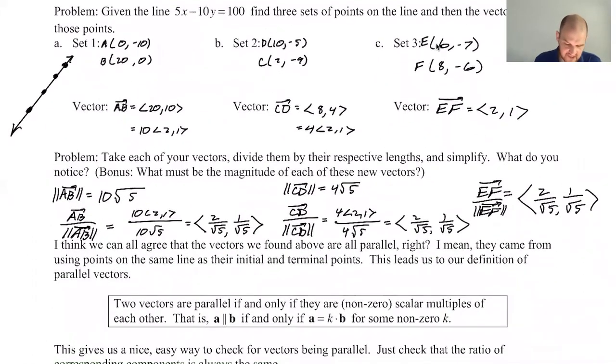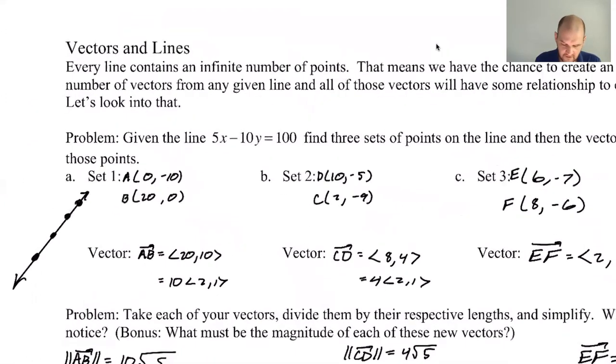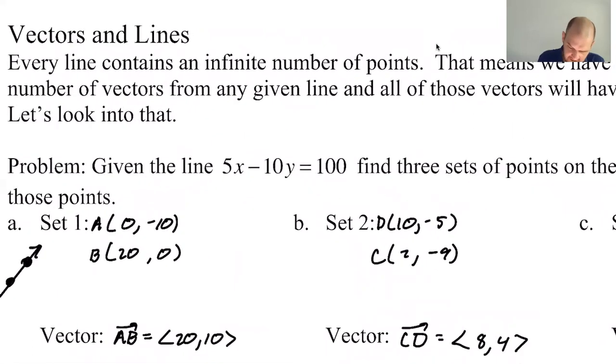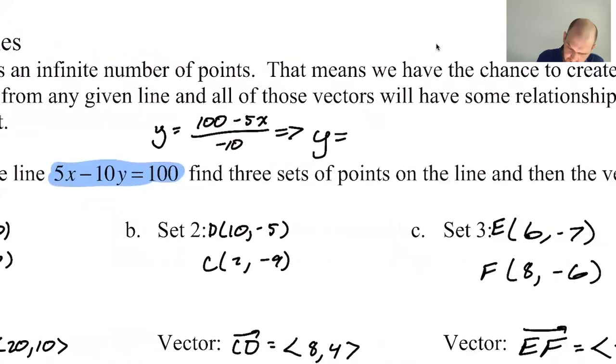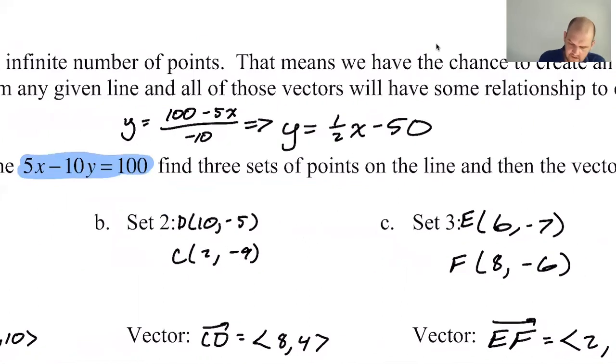When I took each of the vectors and I divided them by their own magnitudes, I got the exact same vector back. That's kind of crazy. One other thing I want to point out is if I take the line and I solve it for y, that's going to give me y equals 100 minus 5x over negative 10. So y equals 1 half x minus 10. Look at the slope.